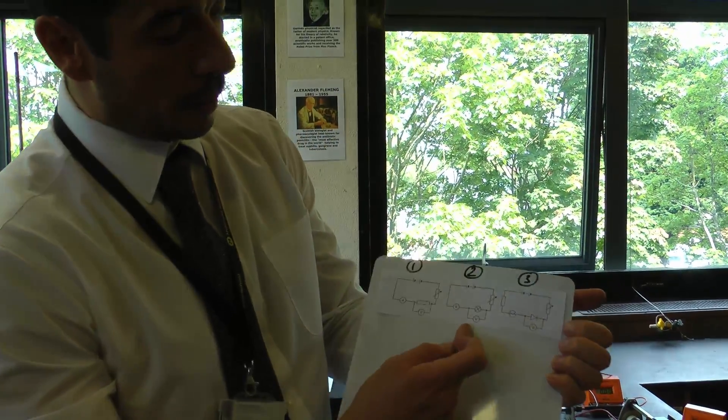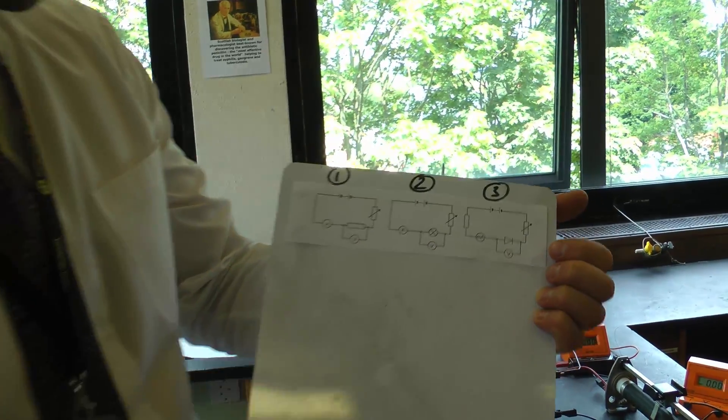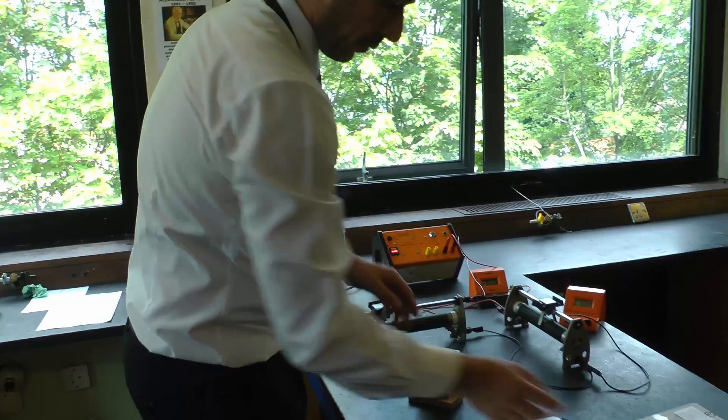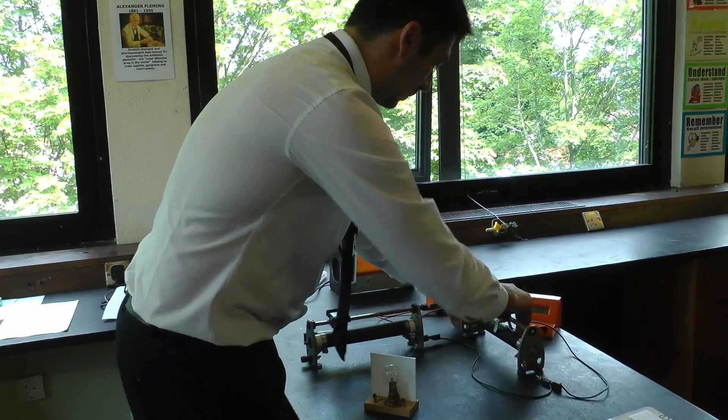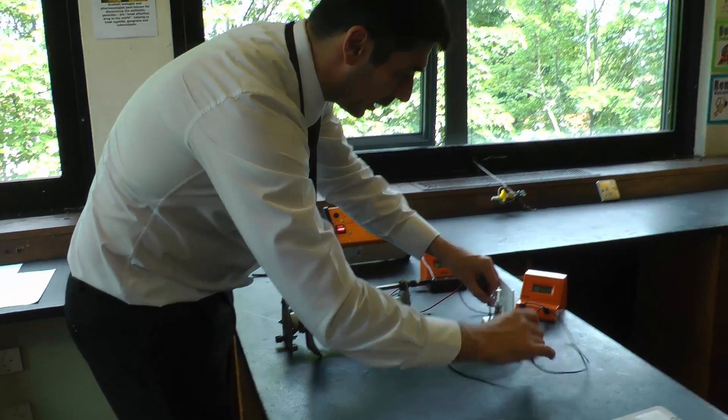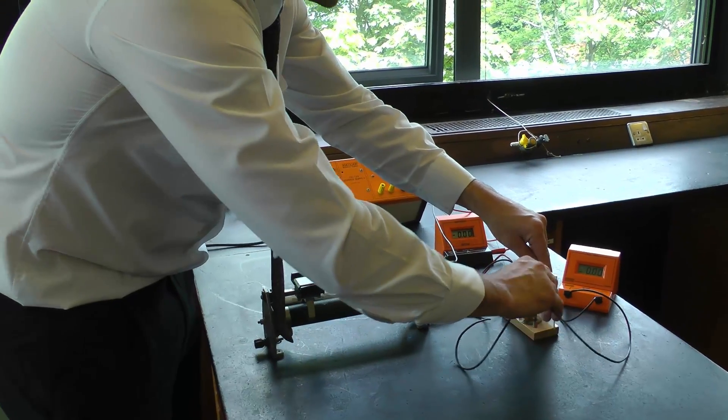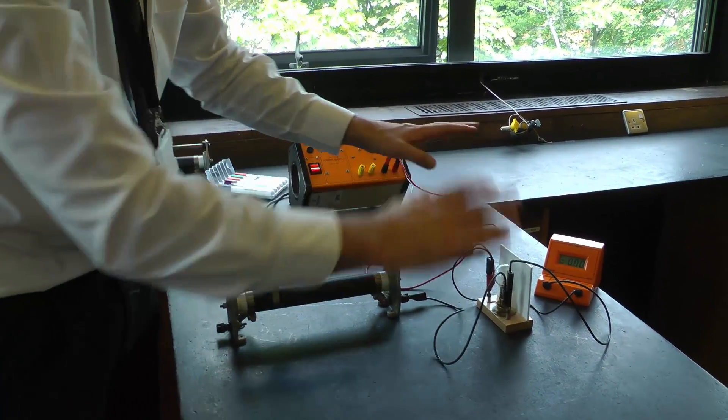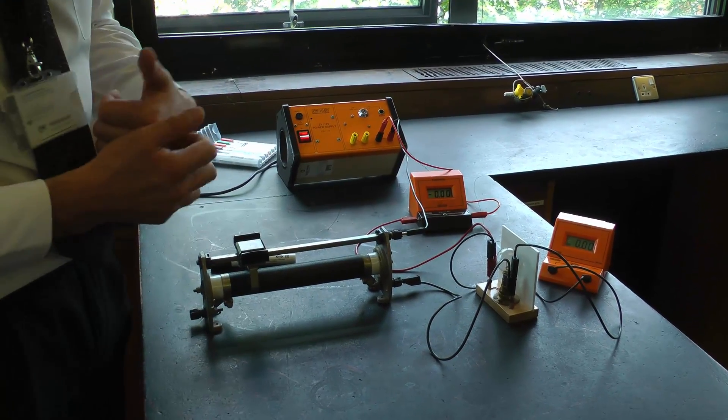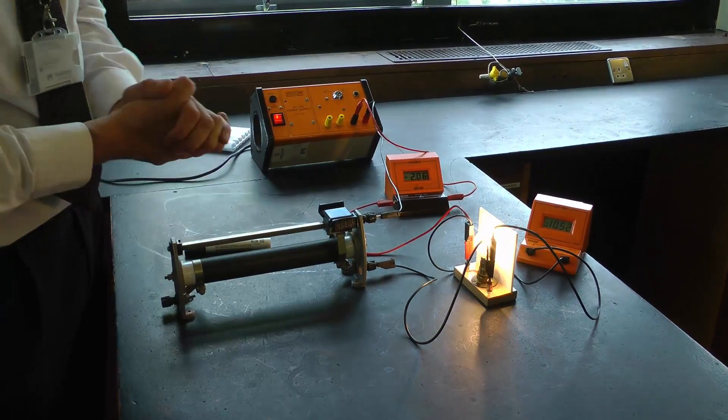Now we're going to do number two. You can see the setup is almost identical. I'm just going to literally swap out this permanent resistor I was using for the bulb. Health and safety: be aware that the bulb and the resistors can get quite warm, so just be careful when handling those. Everything's the same, I've just swapped this for the old resistor. I'm going to do the same and get some readings.